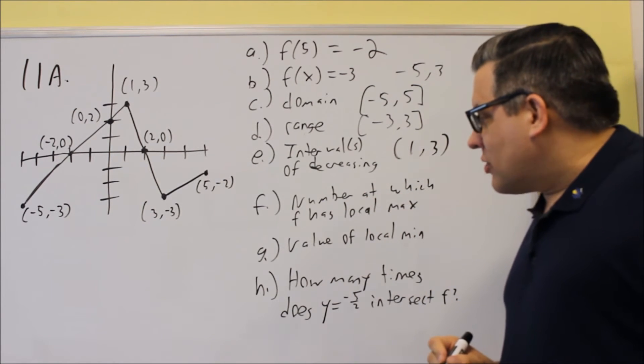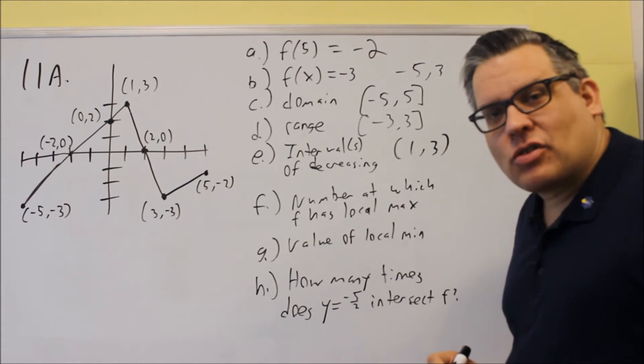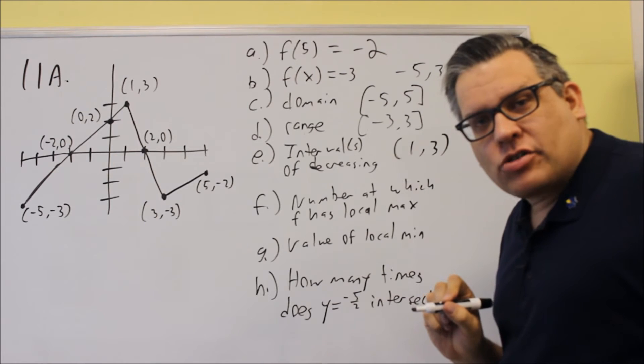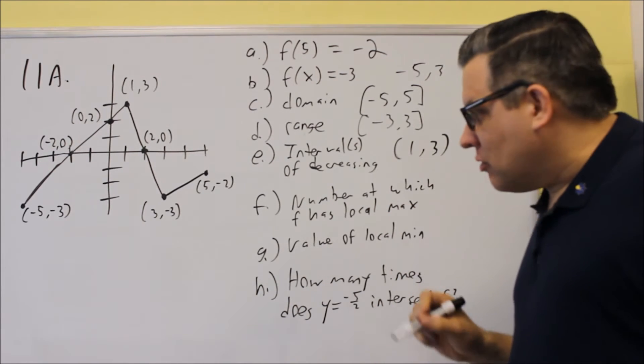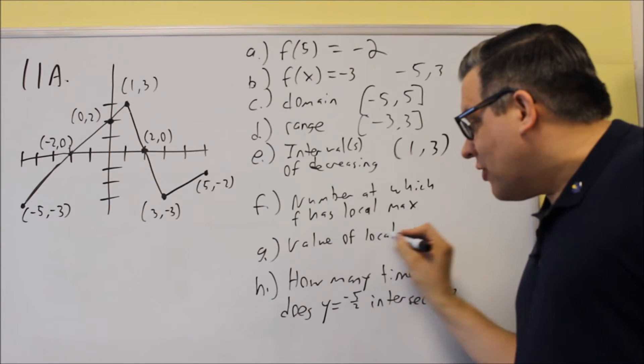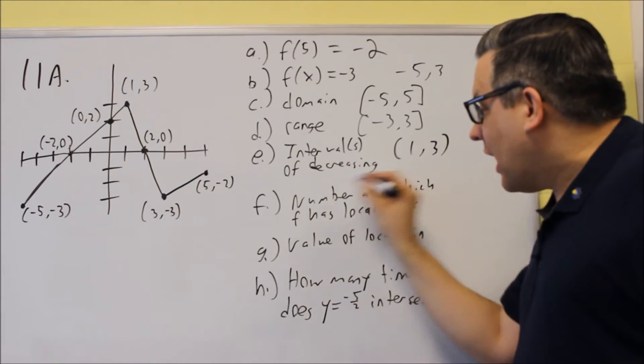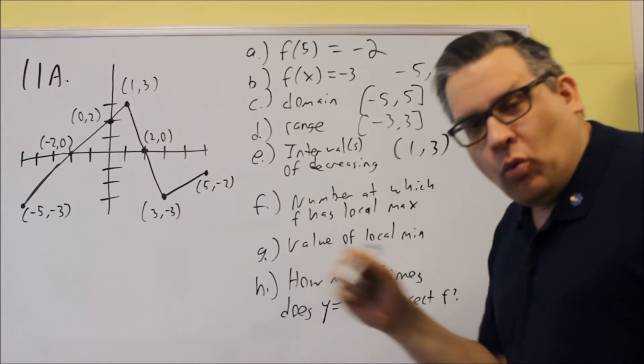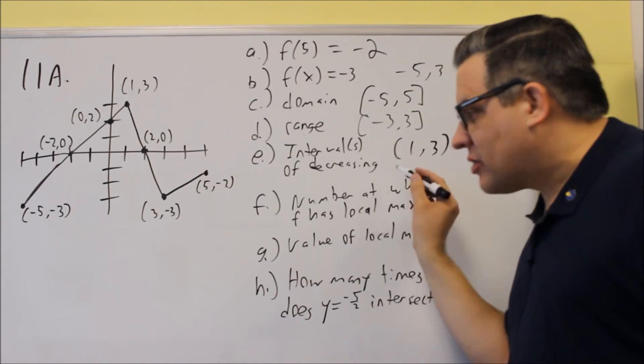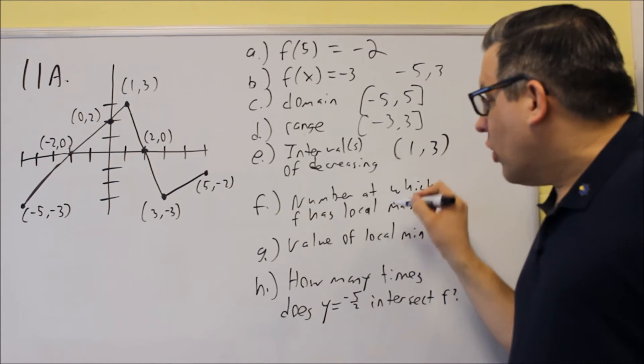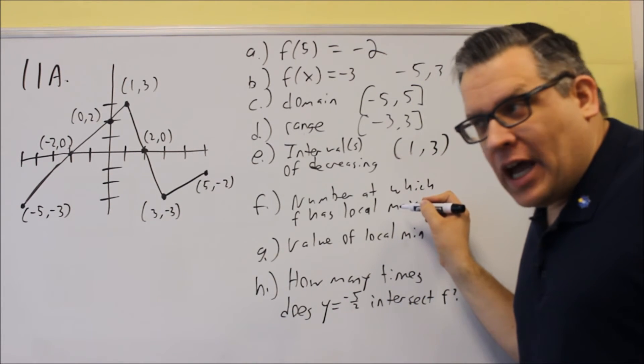F says, list the number at which F has a local max. Now if you see this phrase, the number at which, that's asking you for an x value, whereas for G, if it says the value of the local min, that's a y value. So the way it asks it, and this will be the same wording on the test itself, if you say list the number at which, that means it's looking for x value. So it's saying, what's the x value of the local max?